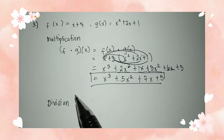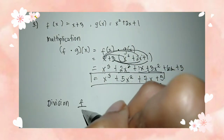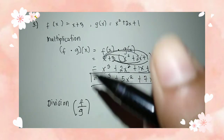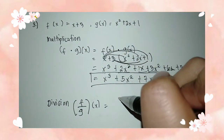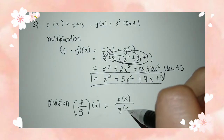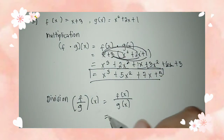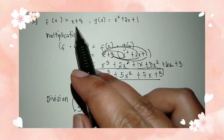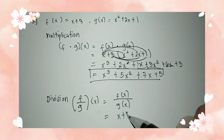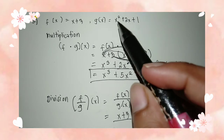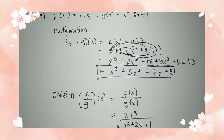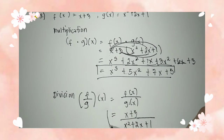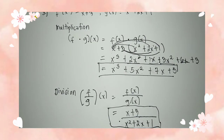Moving on to division. We have f over g, or f divided by g of x, is equal to f of x over g of x. So we have f of x which is x plus 3 over g of x which is x squared plus 2x plus 1. Since we can no longer simplify it, that is already the answer.